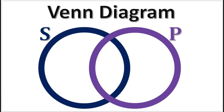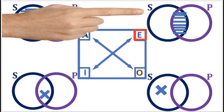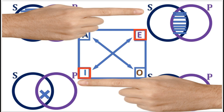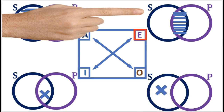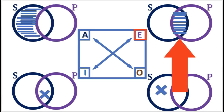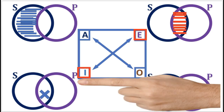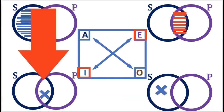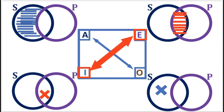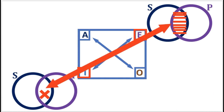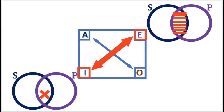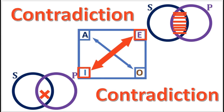Next, let's look at the Venn diagrams for E and I propositions. The diagram for the E proposition asserts that the overlap area is empty. But on the other hand, the diagram for the I proposition asserts that the overlap area is not empty. Once again, we see that these two diagrams are exactly opposite of each other, and this means that the E and I propositions contradict each other.